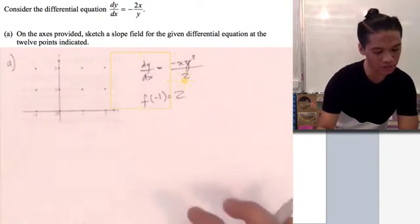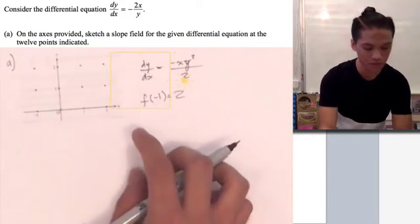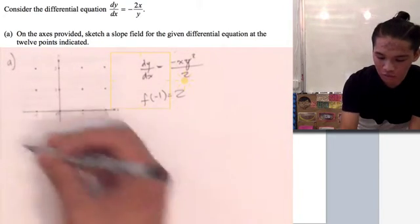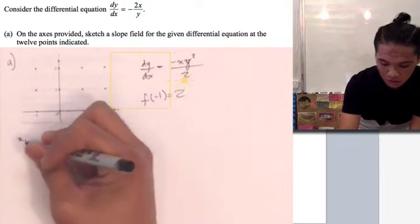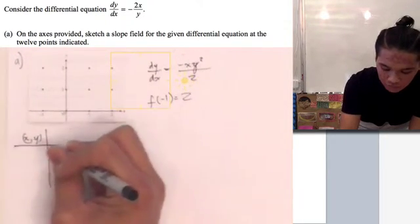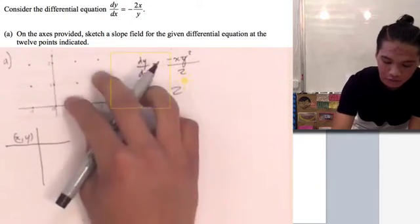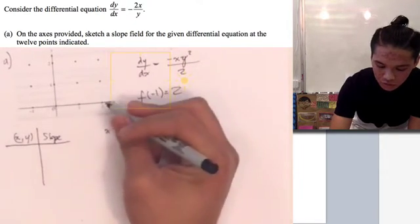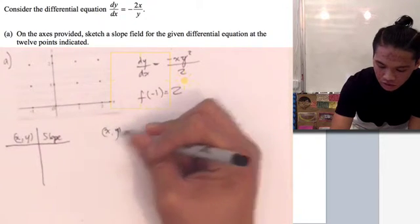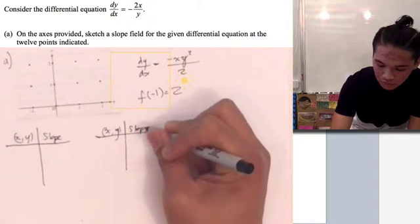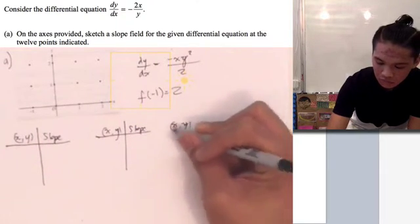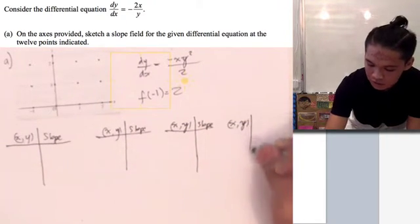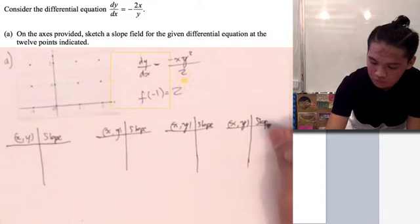Now we can go ahead and move on to Part A, which is asking us to sketch a slope field for the given differential equation at the 12 points indicated. I have the graph right here, and we just need to plot the slopes. We need to use the values of x and y given in this plane and then find the slope. We have 1, 2, 3, 4 values of x, so I'm going to use 4 tables. X, y, and find the slope.